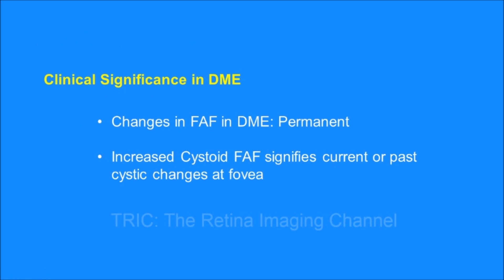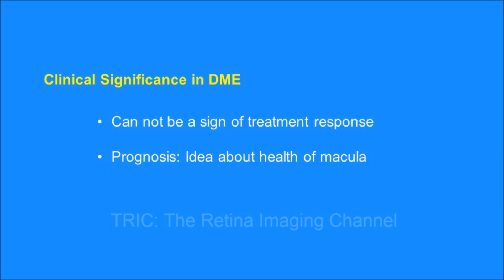What is the clinical significance of this autofluorescence pattern in diabetic macular edema? The changes in autofluorescence in DME are permanent. If there is increased cystoid autofluorescence at the fovea, it is permanent and stays even if the macular edema or CME resolves. This means increased cystoid autofluorescence signifies current or past cystic changes. So even if the OCT is normal now, if the patient's fovea shows cystoid IFF, the patient had CME in the past. As this is a permanent change, it cannot be a sign of treatment response, but it does give an idea about prognosis.